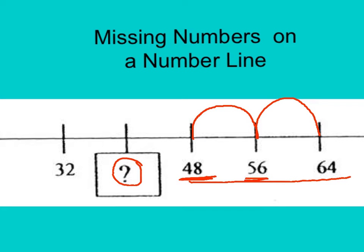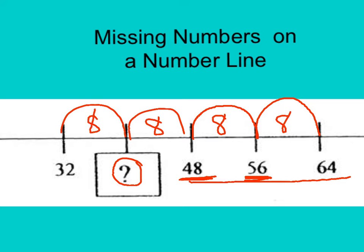I have 48, I have 56. I know to get from 50 to 56 is 6, and to get from 48 to 50 is 2. So the difference between each of these is 8. To figure out what this one is: I'm at 32, I can either add 8 to get 40, or if I'm at 48, I can subtract 8 to get 40. Either way, I know that the answer of what is missing is 40. 40 is what goes in the box.